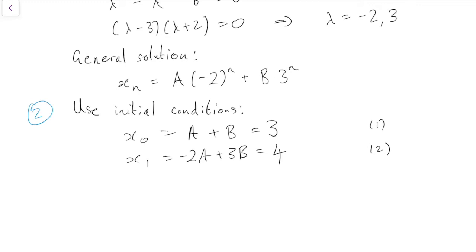I will take two lots of equation 1, add it to equation 2, because that will get rid of all the A's, and that will give me 5B equals 10, which means that B equals 2. And then I will substitute B equals 2 into the first equation to get A plus 2 equals 3, which means A equals 1.